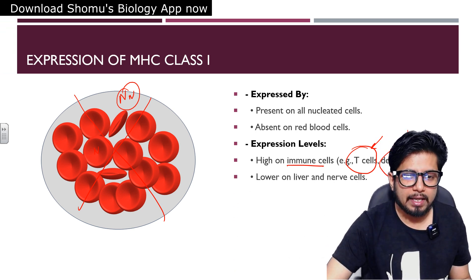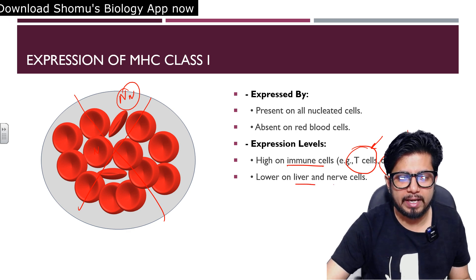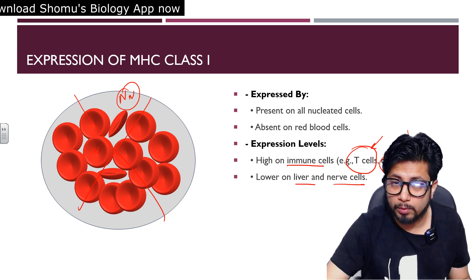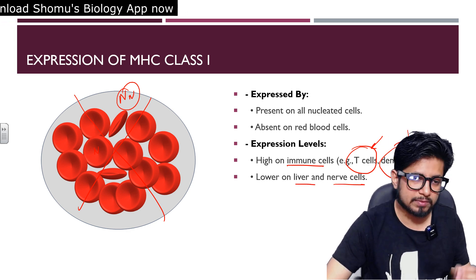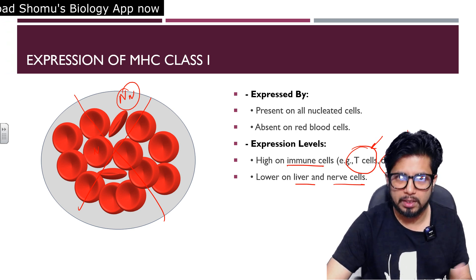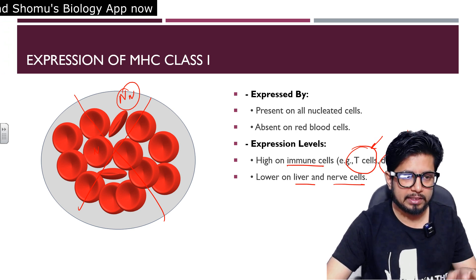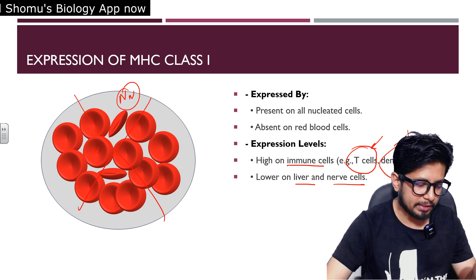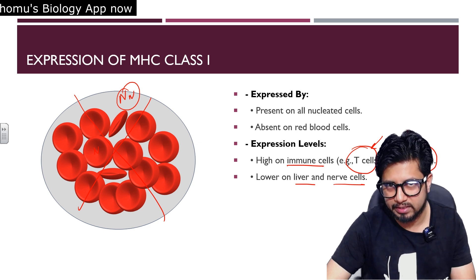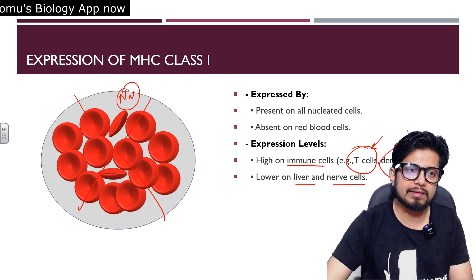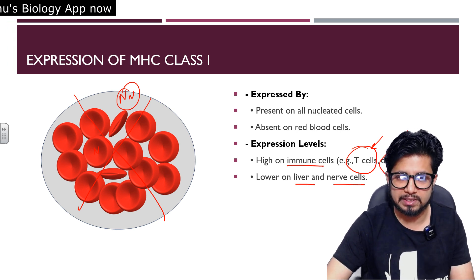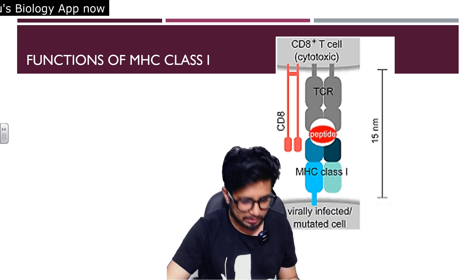Lower expression of MHC class 1 is found in liver cells and nerve cells. This is an important point — MHC class 1 is more predominant in immune system cells like T cells and dendritic cells, while it is very lowly expressed in liver cells and nerve cells.